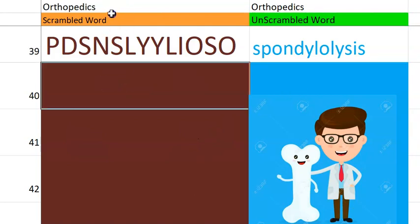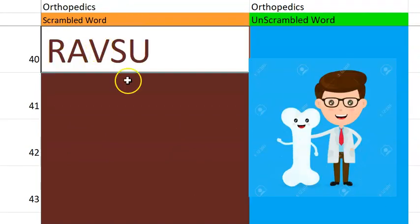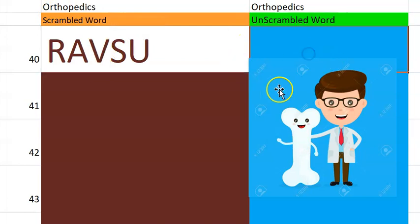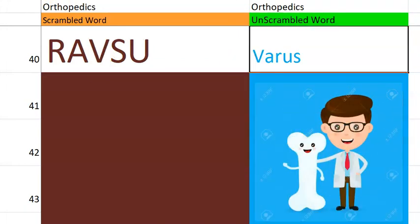Now let's crack the 40th one. Varus. Very good, starting with a V. Basically the deviation is to the midline. Varus.